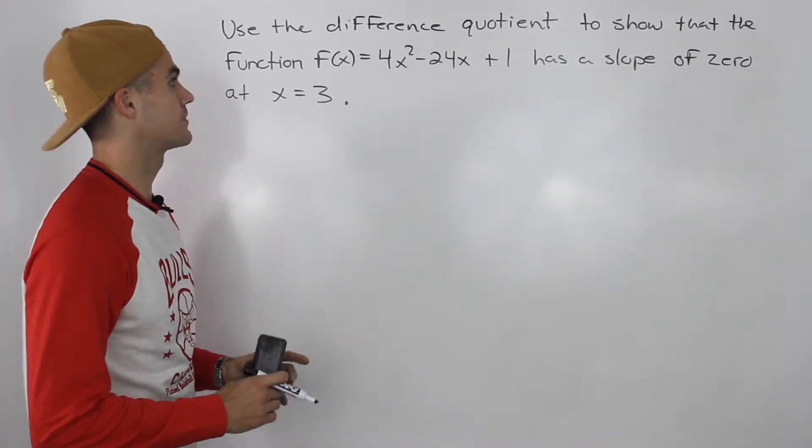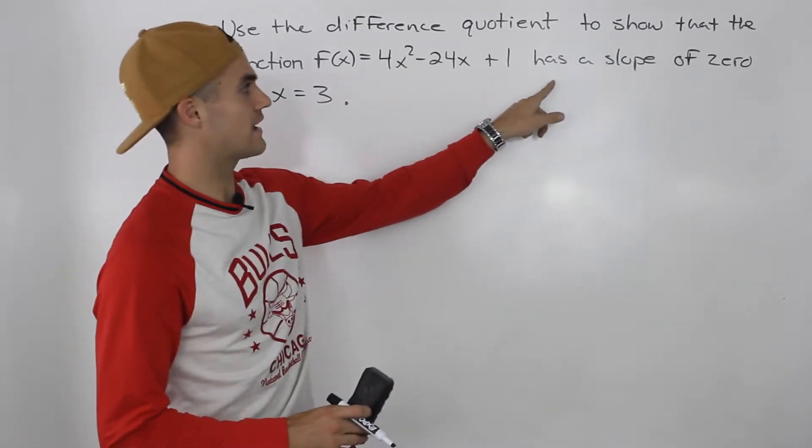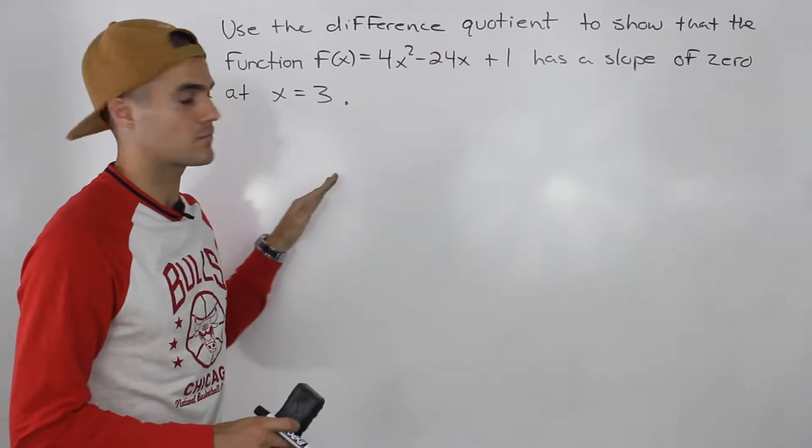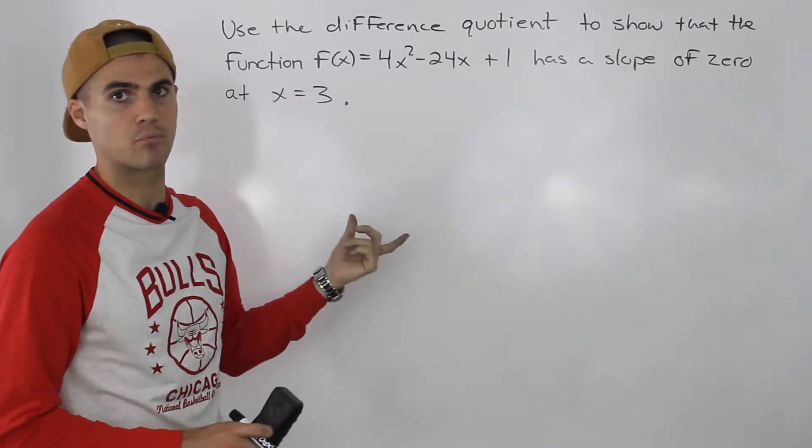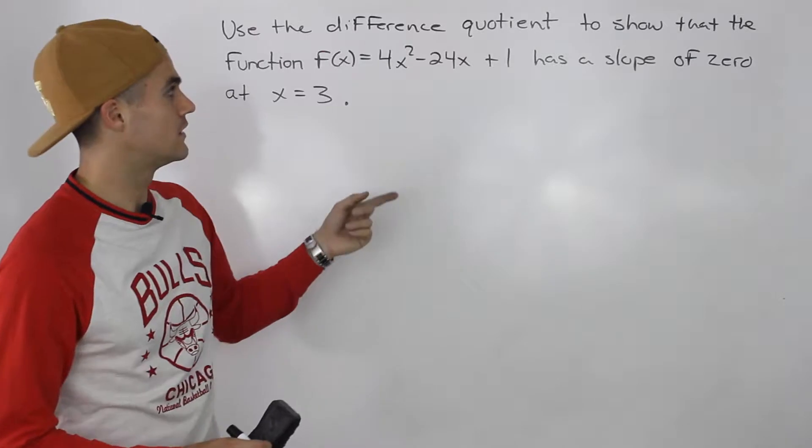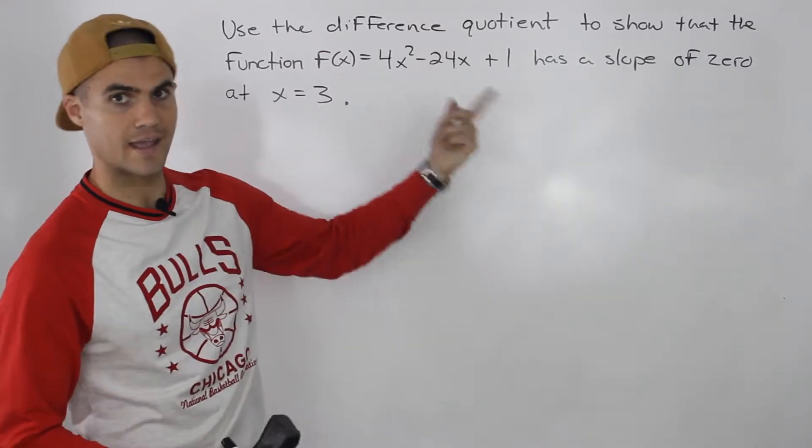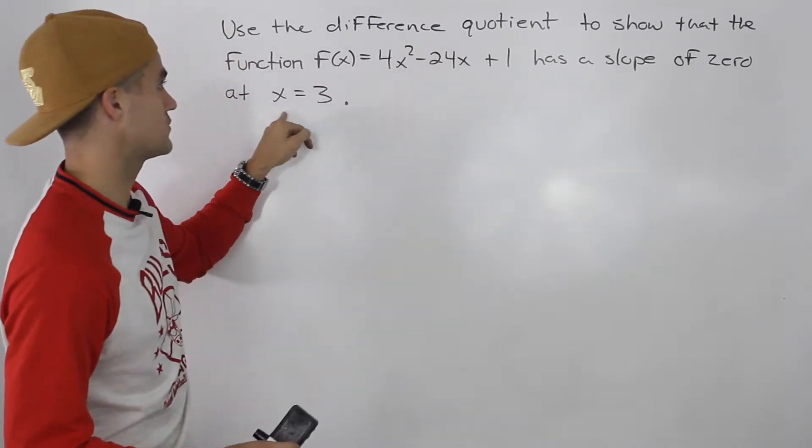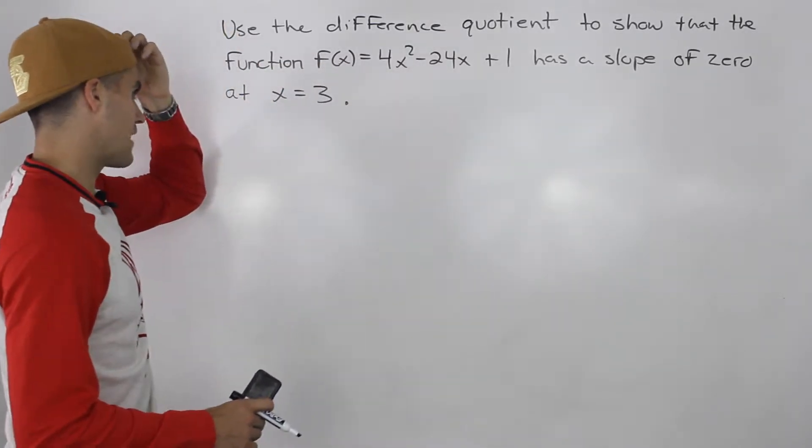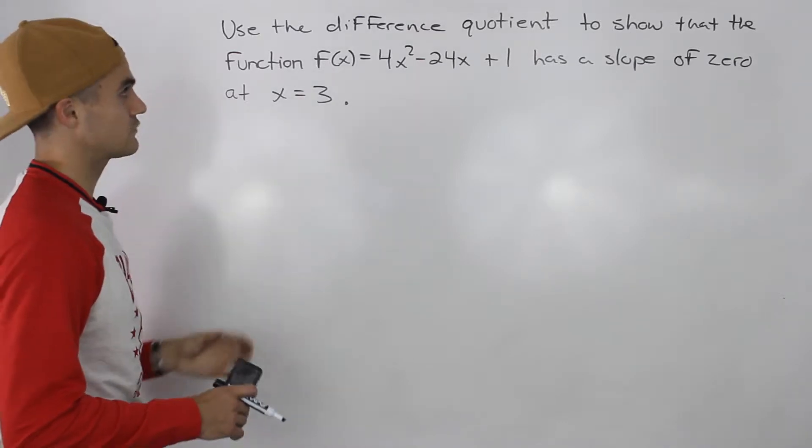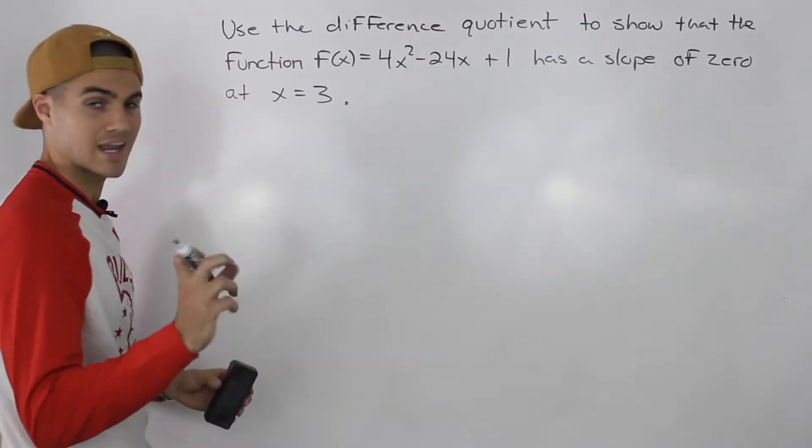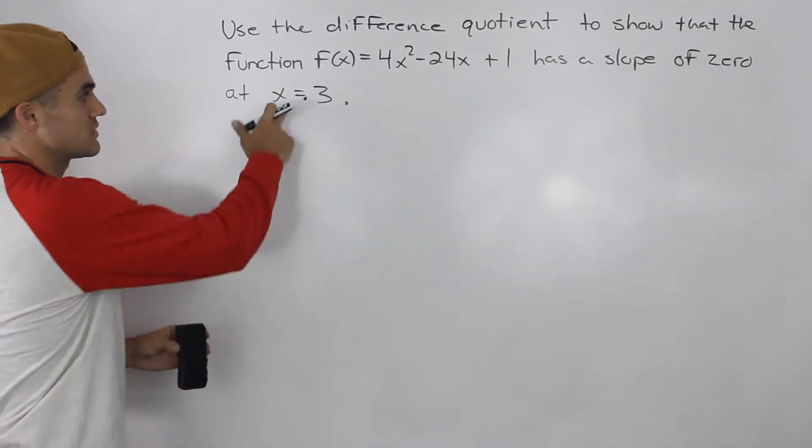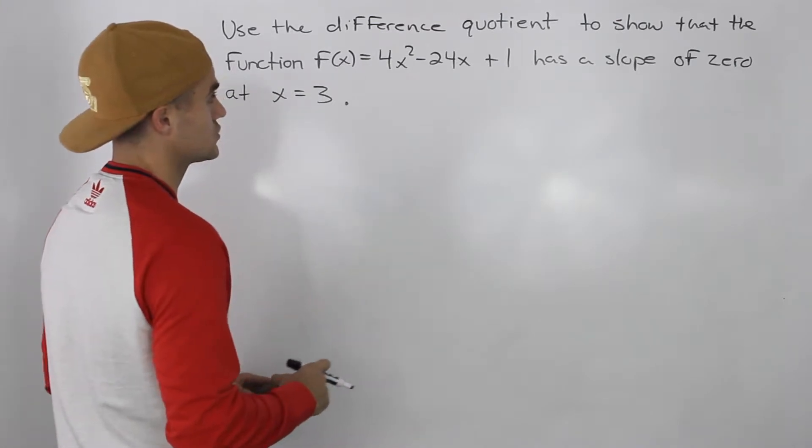So how do we do that? Well, when they tell you that a function has a slope of something at a certain x value, what they mean is that the slope of the tangent at that point is going to be that value. So they're saying that the slope of the tangent is going to be 0 at this x value of 3 for this function. So what that means is that we have to show that the slope of the tangent or the instantaneous rate of change, which is the same as the slope of the tangent, is 0 at this x value. And we have to use the difference quotient to do that.